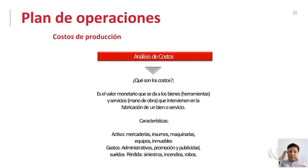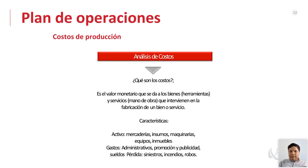Dentro del plan de operaciones también vemos los costos de producción. Los costos son el valor monetario que se da a los bienes, herramientas, servicios y mano de obra que intervienen en la fabricación de un bien o servicio. Las características incluyen activos (mercaderías, insumos, maquinarias, equipos y muebles), gastos administrativos, promoción y publicidad, sueldos, y pérdidas por siniestros, incendios o robos. Siempre es importante diferenciar costos y gastos para tener claro en qué se va a invertir más.